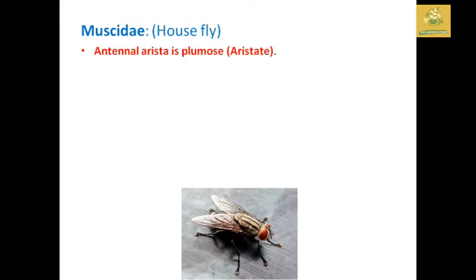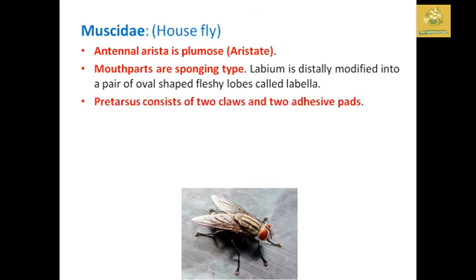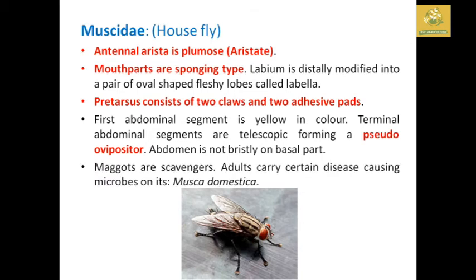Muscidae — the housefly. Antenna arista is plumose. Mouthparts are of the sponging type; the labella is distally modified into a pair of oval-shaped fleshy lobes called labella. The pretarsus consists of two claws and two adhesive pads. The first abdominal segment is yellow in color. The terminal abdominal segment is telescopic, forming a pseudovipositor. The abdomen is not bristly on the basal part. Maggots are scavengers, and the adult carries disease-causing microbes — for example, Musca domestica, the housefly.